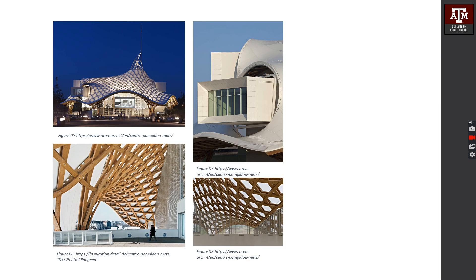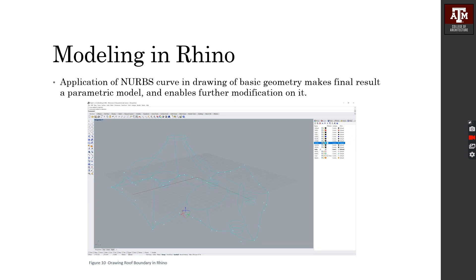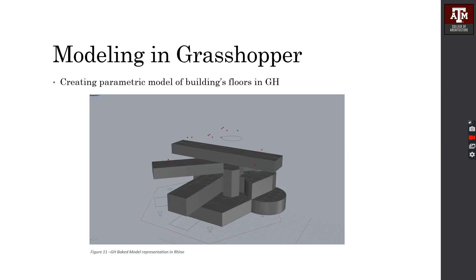These are some pictures of the building. I started my modeling in Rhino, drew floor plans using polyline, and also used NURBS curves for drawing the boundary for the roof. These NURBS curves make the final result a parametric model and enable further modification of the building.